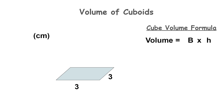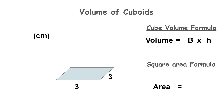Now that we know the base shape of the cube is a square, let's calculate the area of that base. If calculating area is not something you're familiar with, I recommend you watch my video on calculating area of polygons first. To calculate the area of a square we use the formula L multiplied by L, which stands for length multiplied by length — the length of the bottom of the square, three centimeters, multiplied by the length of the side also three centimeters.